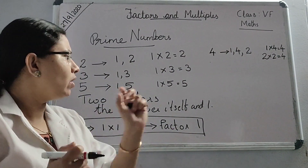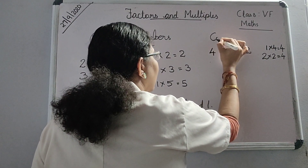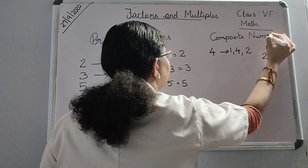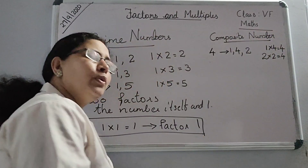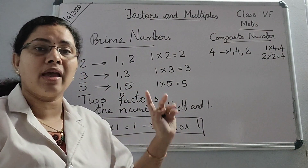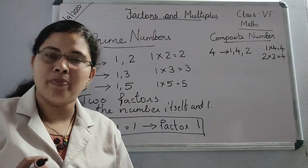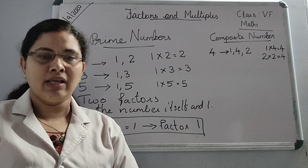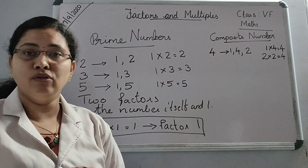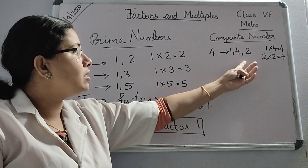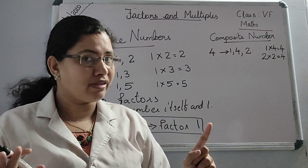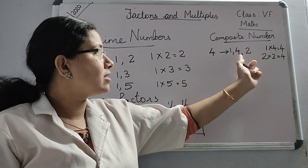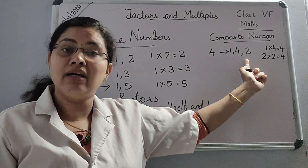Let us check whether 1 is a composite number or not. The next topic is composite numbers. The numbers which are not prime are called composite numbers. So for a composite number like 4, how many factors does it have? The number itself is a factor and 1 is a factor, but other than that there are other factors also. For 4: 1 is a factor, 4 is a factor, and another factor is 2.